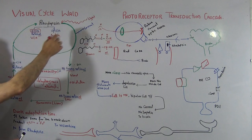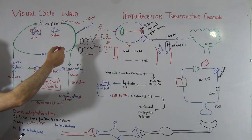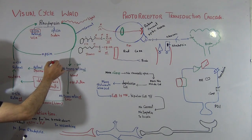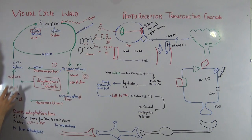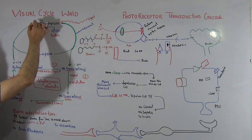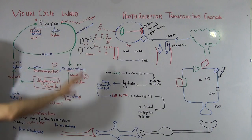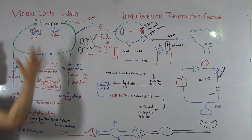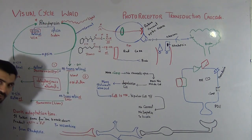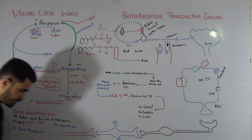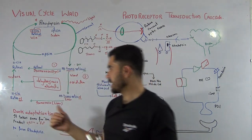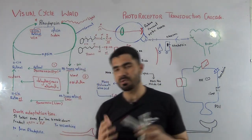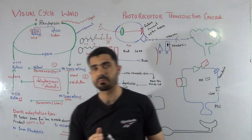Pathway one and pathway two together ensure that at the end of the process, 100% of all the fragments are converted back into rhodopsin. There is one more important concept called dark adaptation time.